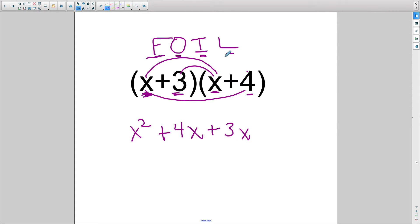And then finally the last, the last items in both quantities, which is the 3 and the 4. And this is going to be 3 times 4, both positive, and that's going to give us a positive 12.